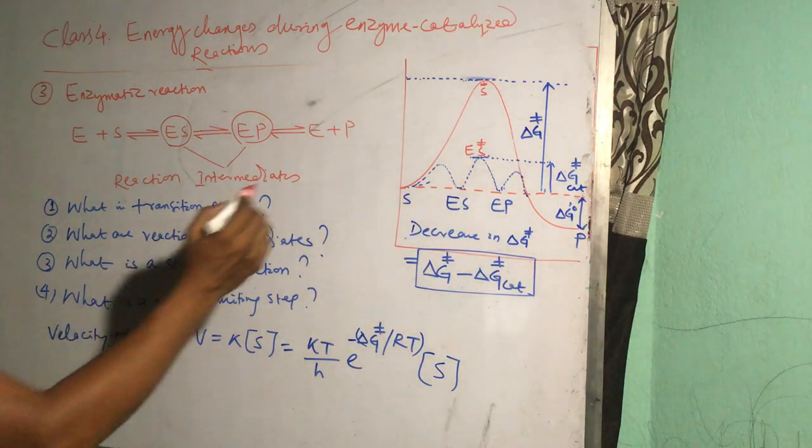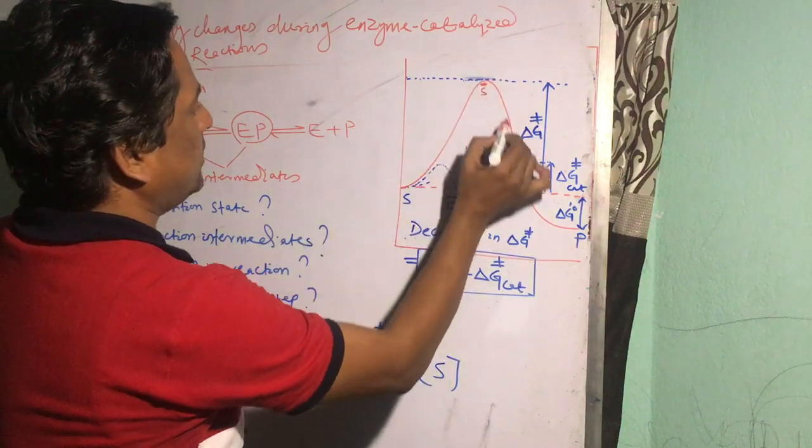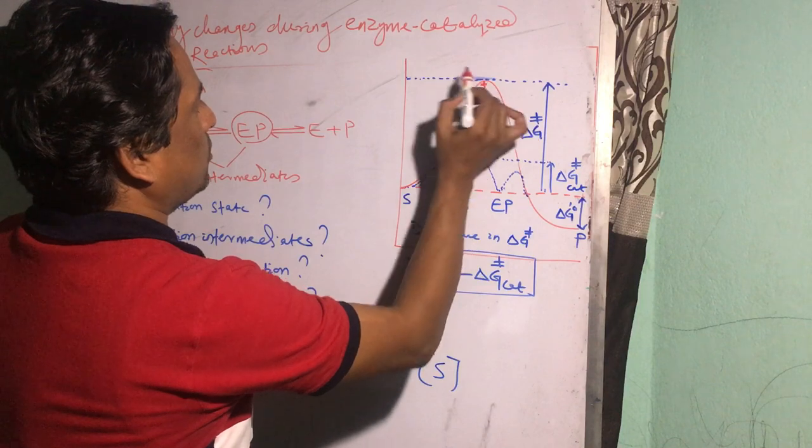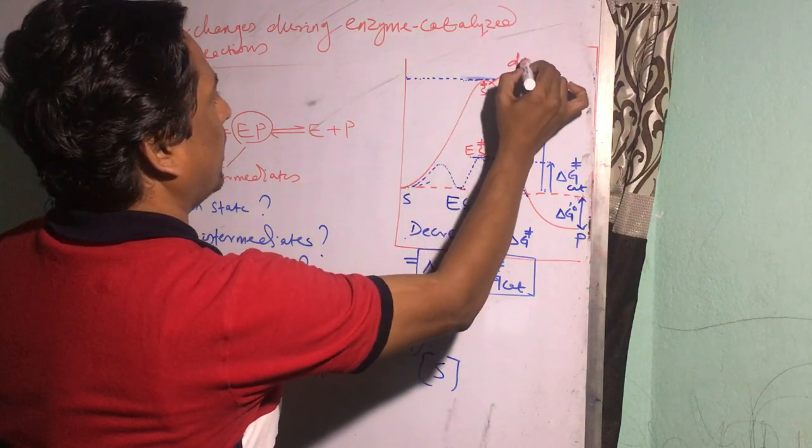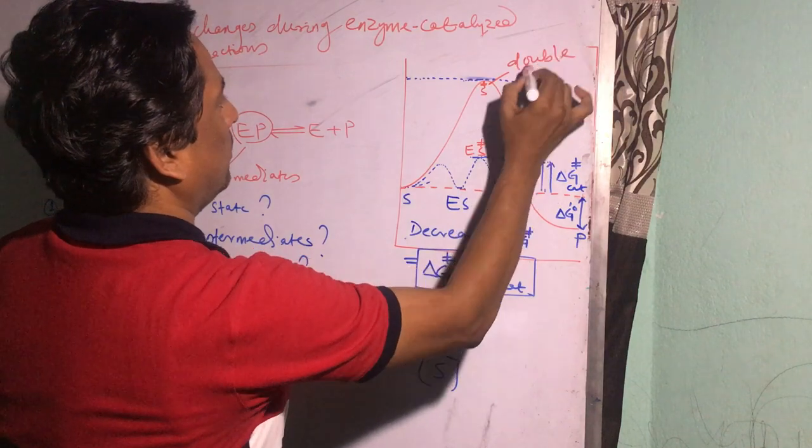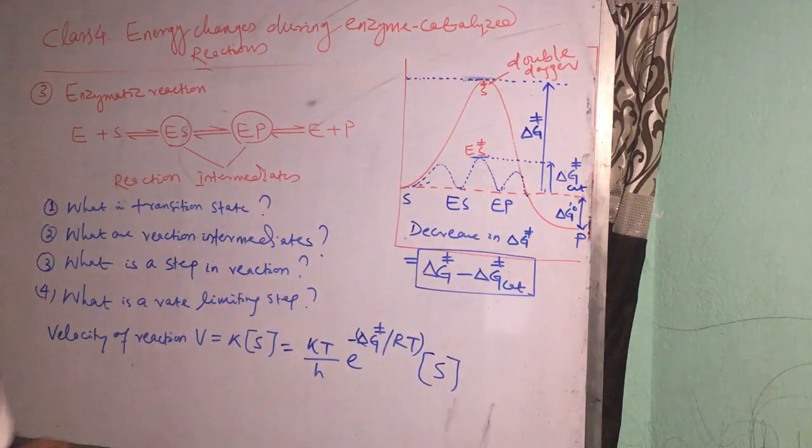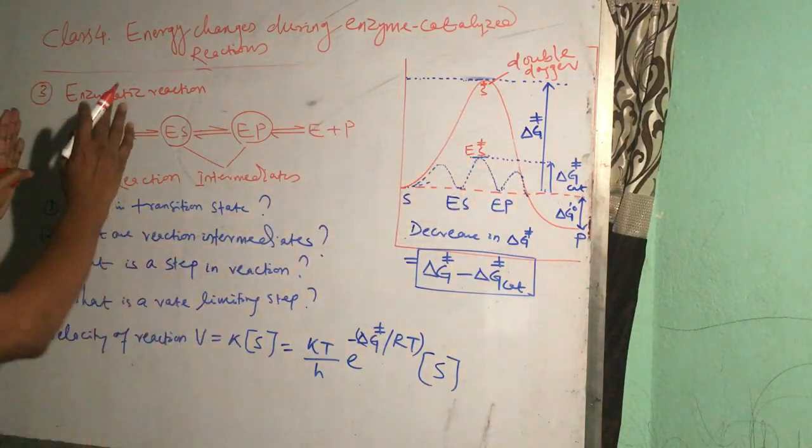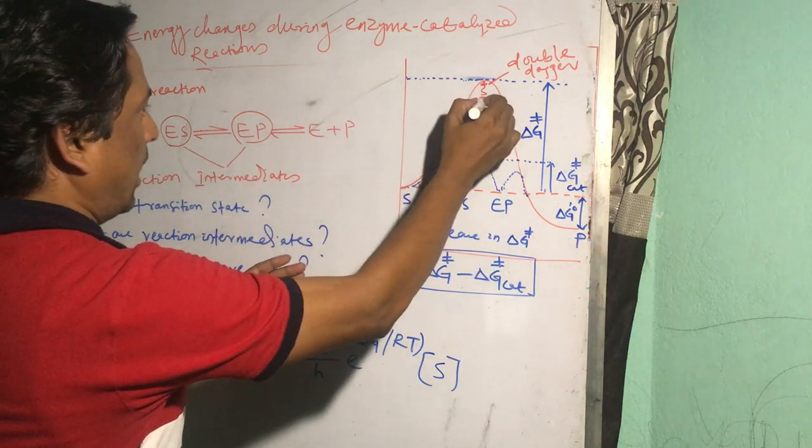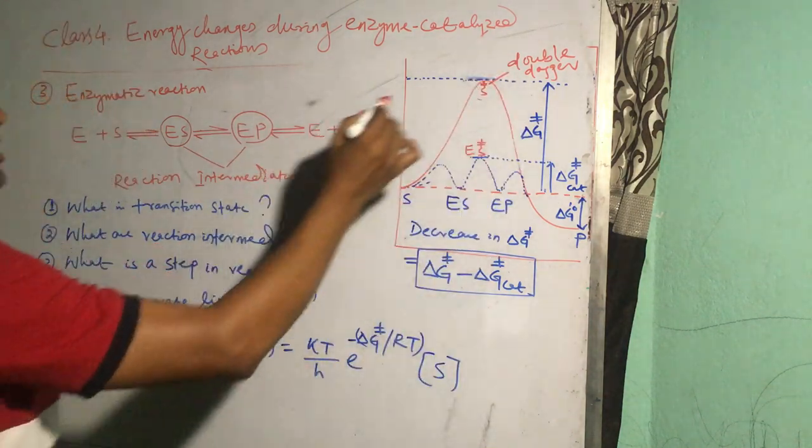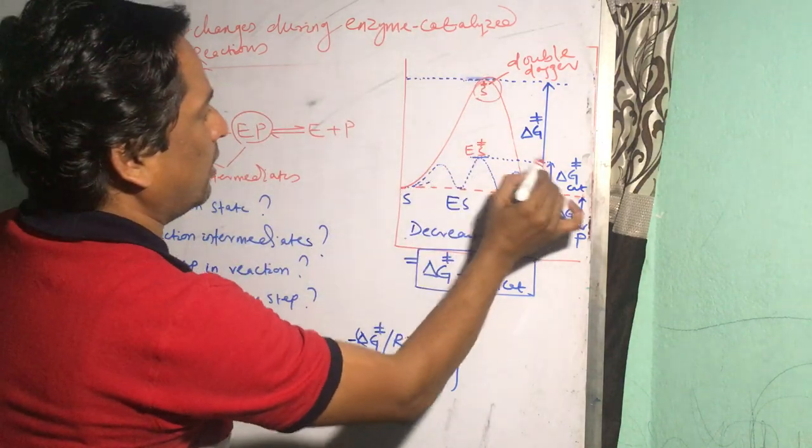So when the enzyme is not present, this S superscript double dagger—so this is a double dagger symbol—is the highest energy species. But in the presence of enzyme, the energy of this highest energy species decreases to a lower level.